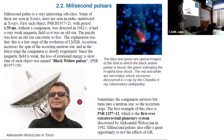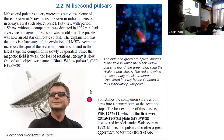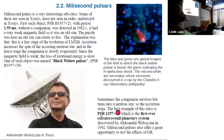For Poland, millisecond pulsars are additionally interesting because Alexander Wolszczan discovered the first extra-solar planet in just such a system — planets going around a millisecond pulsar. This discovery was made in 1992.